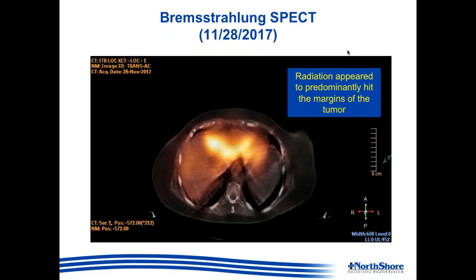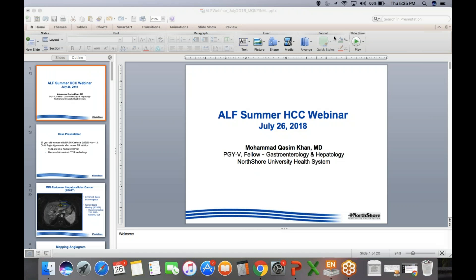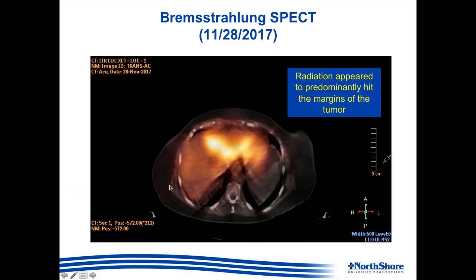Shortly after the Y-90 radioembolization, the patient underwent bremsstrahlung SPECT imaging. What we noticed was that the radiation appeared to predominantly hit the margins of the tumor as opposed to the center of the tumor itself. At this juncture, our interventional radiologists went back and reviewed the imaging and the angiogram. They noticed that the catheter at the time of Y-90 radioembolization was actually placed distal to the point of bifurcation of the left hepatic artery.